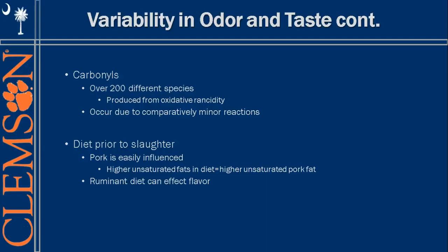Carbonyls are ever-prevalent — there are over 200 different species of them — and they're important as indicators of oxidative rancidity. There's not a lot we can do to control them extensively; all these minor reactions produce them. They don't have an extreme effect on their own, but they do get the ball rolling and begin the process of oxidative rancidity.